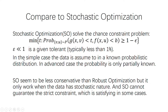In the simple case for the above problem, the data u and v is assumed to be in a known probability distribution. In some advanced cases the probability is only partially known — for example, we only know that it follows a Gaussian distribution and we know the lower and upper bounds for the mean or covariance. We can find that stochastic optimization seems to be less conservative than robust optimization because we can tolerate violation of the constraint.